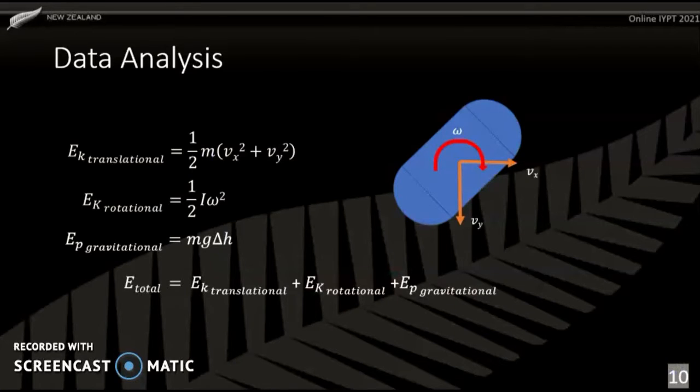Using this data, I got the energy of the tic-tac using these equations. The translational kinetic energy is the combination of the X and Y velocity of the centre of mass, and the total energy for my system is the sum of translational and rotational kinetic energies of the tic-tac, plus the tic-tac's gravitational potential energy.